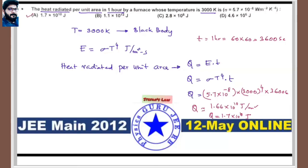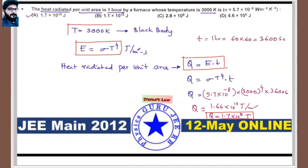Stefan's law: Q = E·t = σT⁴·t. The furnace is treated as a black body due to its high temperature. The answer is approximately 1.7×10¹⁰ J/m².